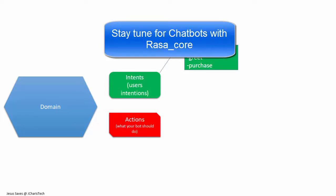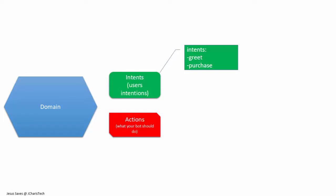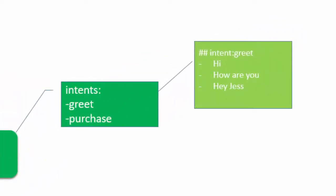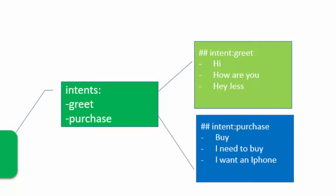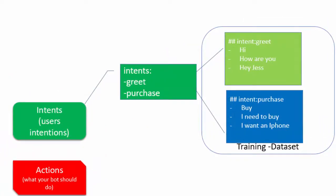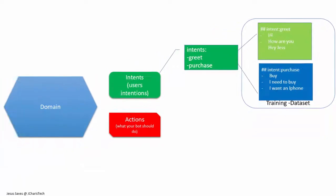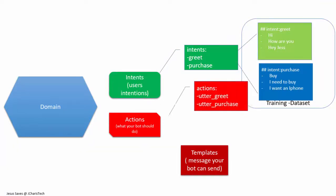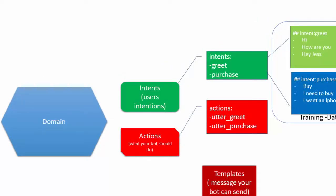All the intents you use your natural language understanding to classify — like greeting, package, goodbye, weather, location — those go in the domain. An example of a simple greeting intent includes: hi, how are you, hey, what's up. An example for packaging intent includes: I need to buy, I want something, I want to buy. All these things make up the training dataset.